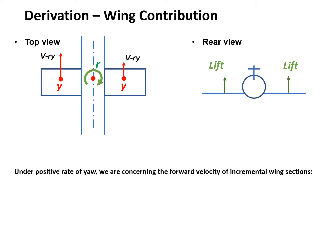You may wonder why it's minus. This is because the origin is at the center of gravity. The left wing has negative Y and the right wing has positive Y. We assume R is positive, so R times Y is a negative value for the left wing, making V minus RY larger than V. On the right wing, Y is positive, so V minus RY is slightly smaller than V.